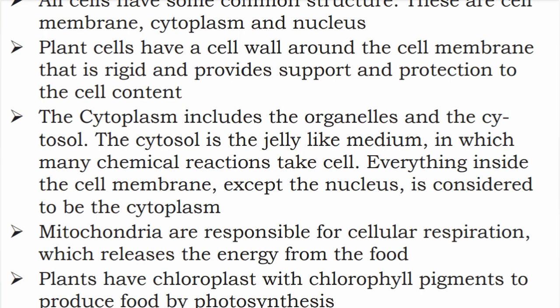Chloroplasts with chlorophyll pigments enable plants to produce food. The inputs are air, water, and sunlight, and chlorophyll is what allows food to be produced by the method of photosynthesis.